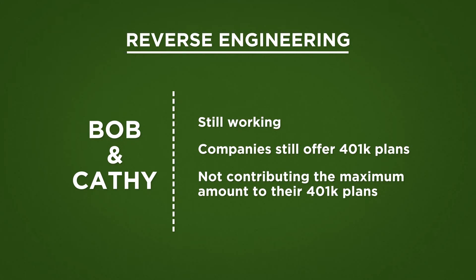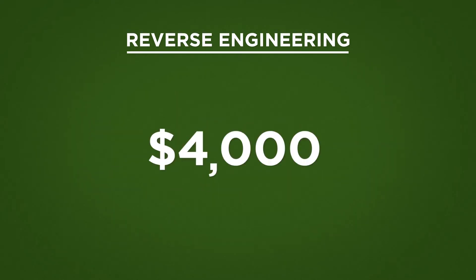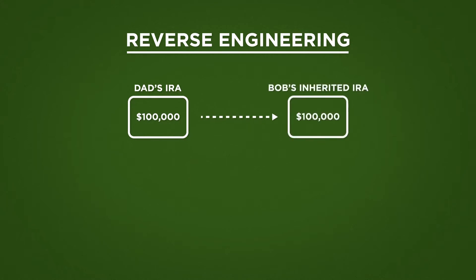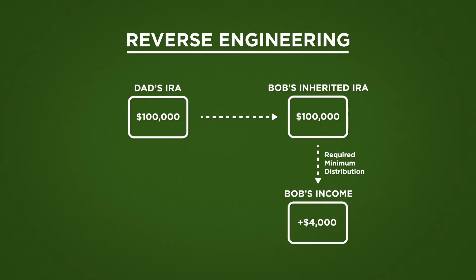This gives them a great opportunity to consider reverse engineering. If Bob was to decide to take those distributions over his lifetime, he would be receiving $4,000 a year, and he would have to include that as taxable income. But what he can do is increase his 401k contributions. Let's talk about how this works. Bob's dad has a $100,000 traditional IRA. He needs to transfer this into an inherited IRA, then make the decision to take distributions over the course of his life, which would increase his taxable income for the year. So what we do at this point is have Bob reduce his pay at work by $4,000 and make that as a contribution to his 401k.